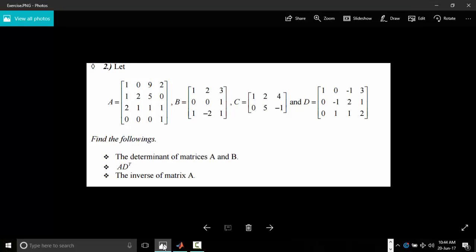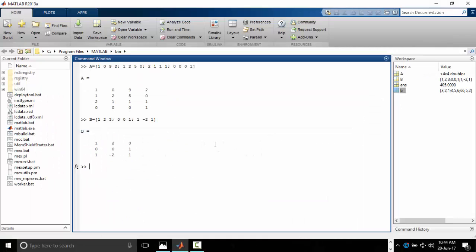Then we have c 1, 2, 4, 0, 5, minus 1. C 1, 2, 4, 0, 5, minus 1. Enter.